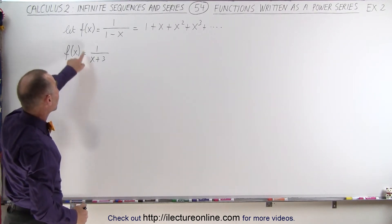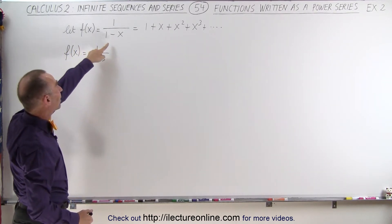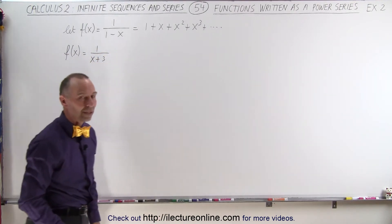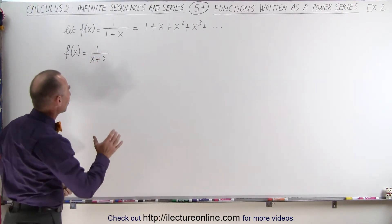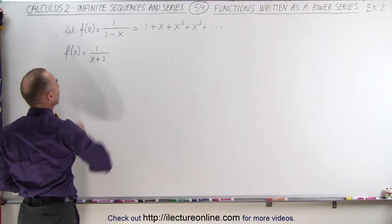Now, we remember that f of x equals 1 over 1 minus x can be written as this geometric series right here. So again, the trick is to try to make this look like that.